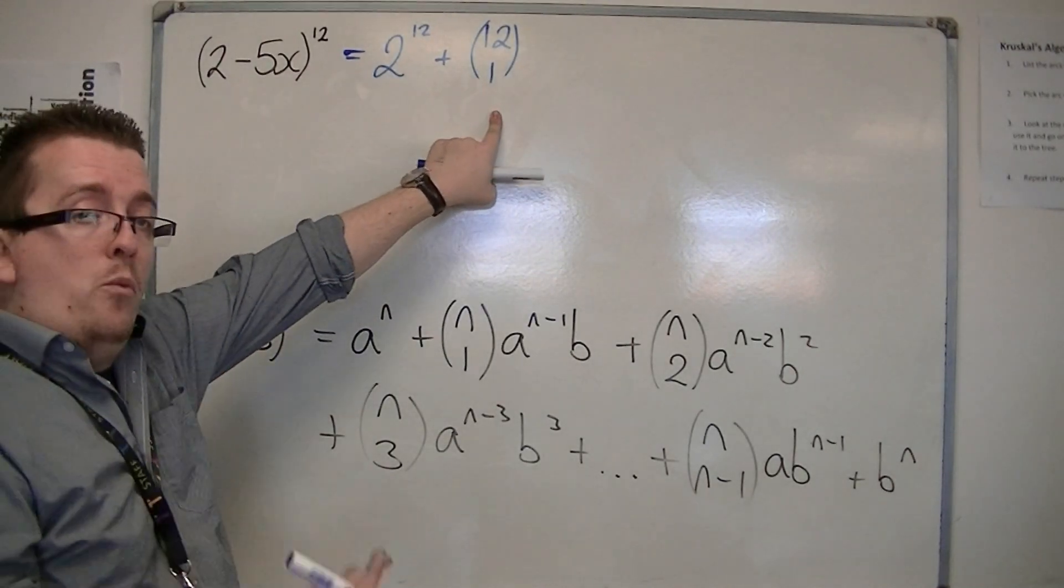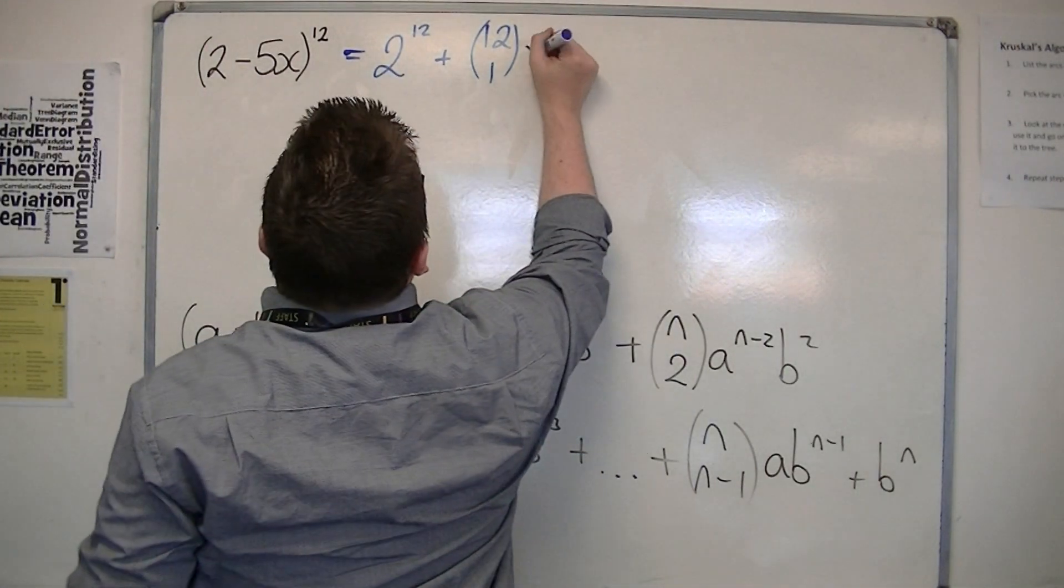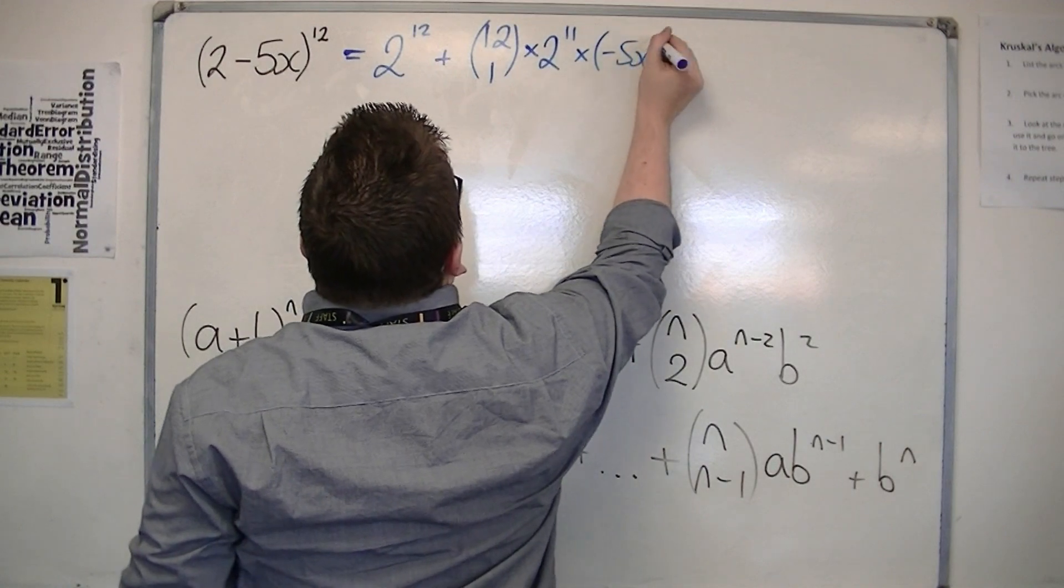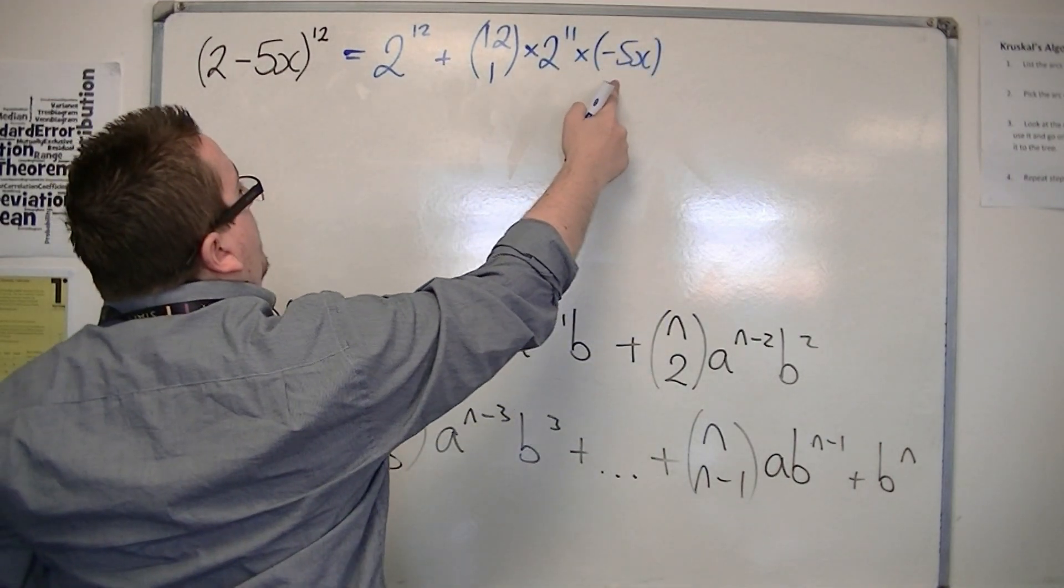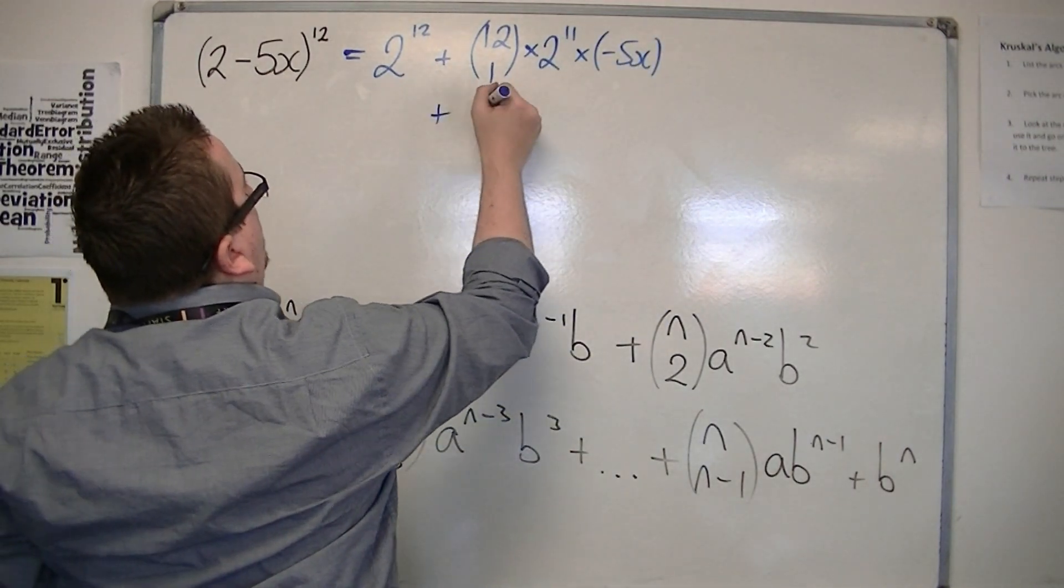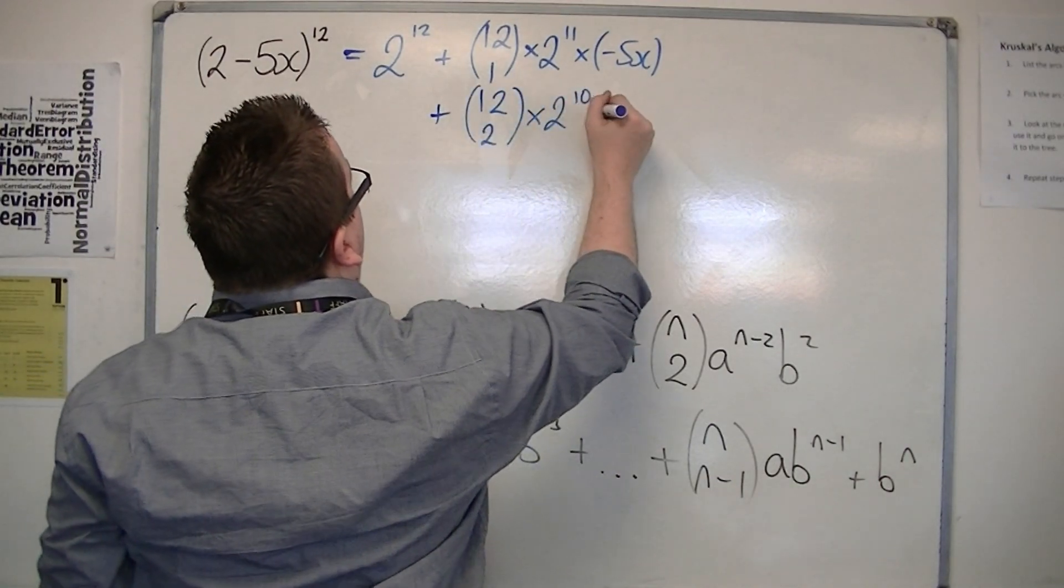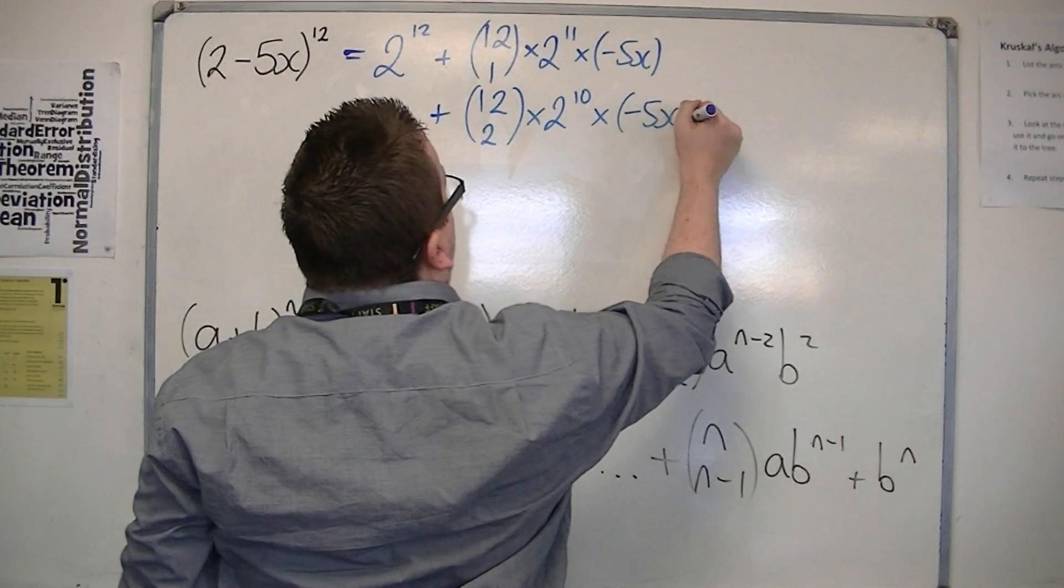Now we've got $\binom{12}{1} \times 2^{11} \times (-5x)$. Remember, it's in a bracket. Plus, $\binom{12}{2} \times 2^{10} \times (-5x)^2$.